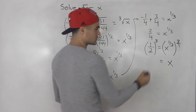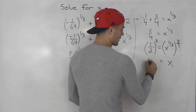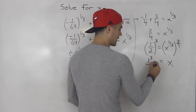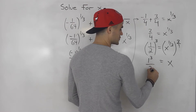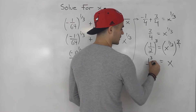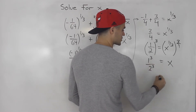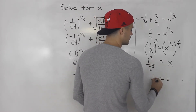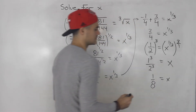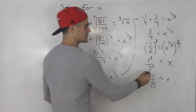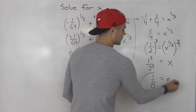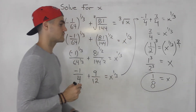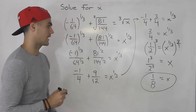Then 1 over 2 to the power of 3 would be 1 to the power of 3 over 2 to the power of 3. 1 to the power of 3 is just 1. 2 to the power of 3 is 8. So x is equal to 1 over 8. That is the final answer.